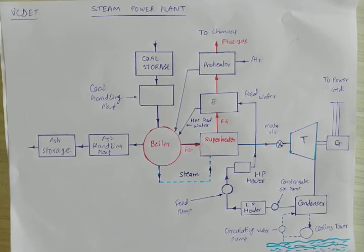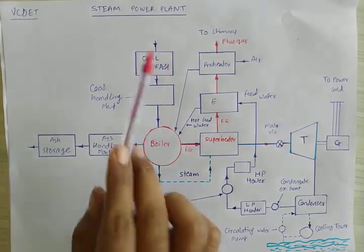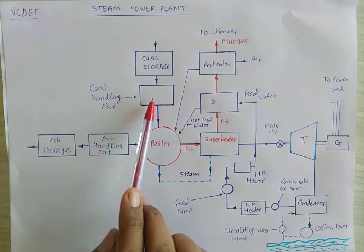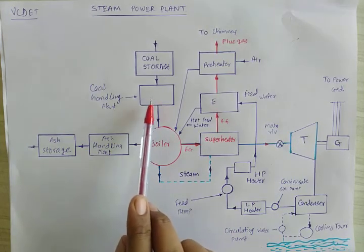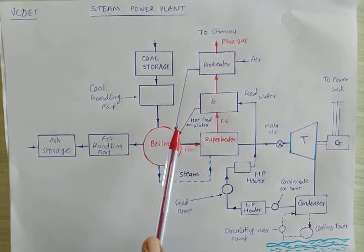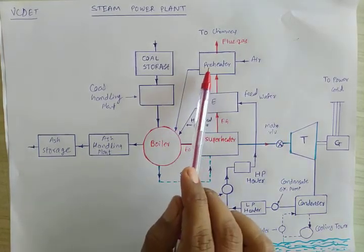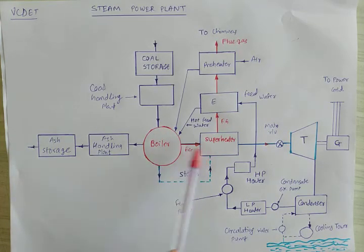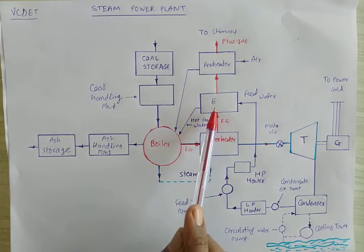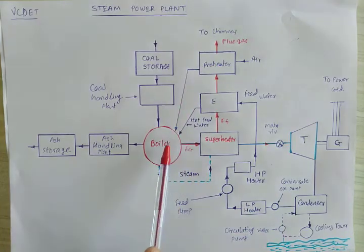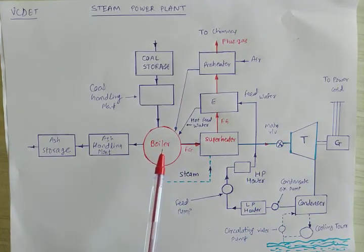In the modern thermal power plant, coal from the mines comes into coal storage, then is forwarded to the coal handling plant, and then into the combustion chamber of the boiler. At the same time, pre-heated air comes from the pre-heater. The flue gases leaving the boiler pass through the super-heater, then the economizer, and then the air pre-heater, where they pre-heat the incoming atmospheric air. That pre-heated air is sent back to the combustion chamber of the boiler for burning the coal.